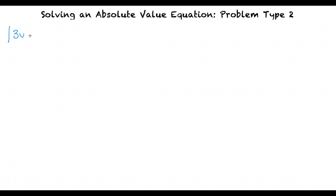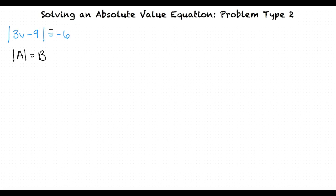Let's start off by solving the equation: the absolute value of 3v minus 9 is equal to negative 6. We'll think of this as being in the form |a| = b. At first glance, it can be assumed that this equation will have no solution, since the b value — which in this case is negative 6 — is less than 0.